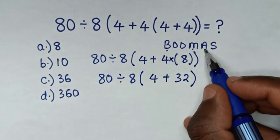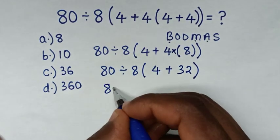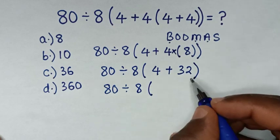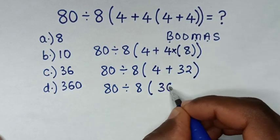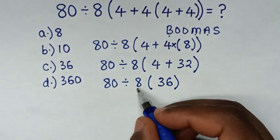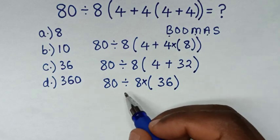We deal with addition inside this bracket. So it will be 80 divided by 8, bracket 4 plus 32 is 36, bracket. Then between 8 and 36, in here we have multiplication.